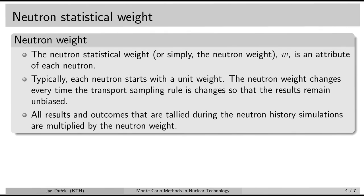All the results and outcomes tallied during the neutron history simulations are going to be multiplied by the neutron weight. So every time you collect the neutron flux, for instance, you are going to multiply the flux by the corresponding neutron weight of the neutron history.